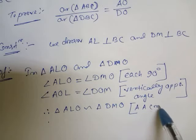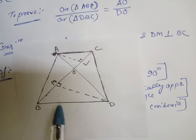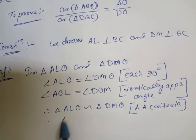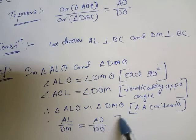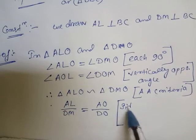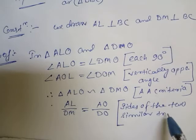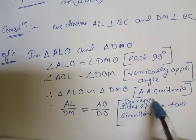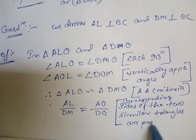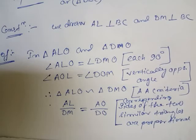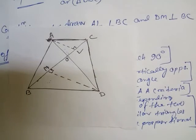Since the triangles are similar, we can write AL/DM = AO/DO. The reason is that corresponding sides of two similar triangles are proportional. This gives us AL/DM = AO/DO.